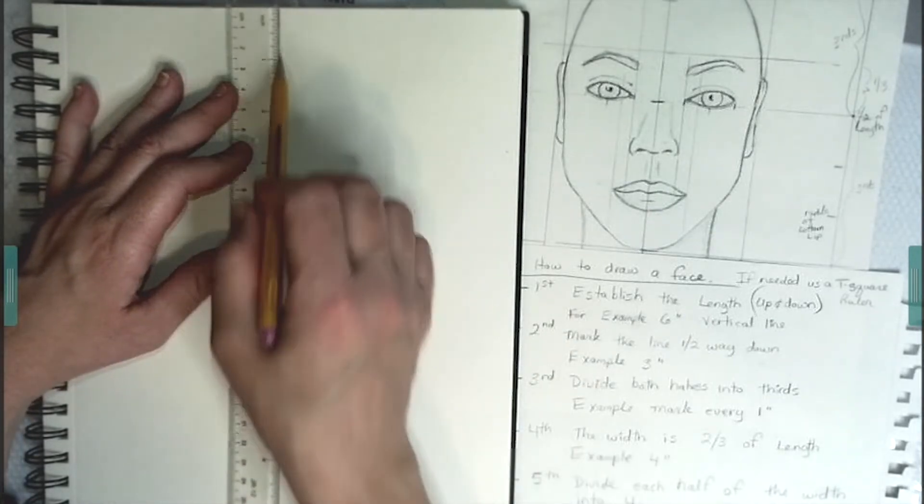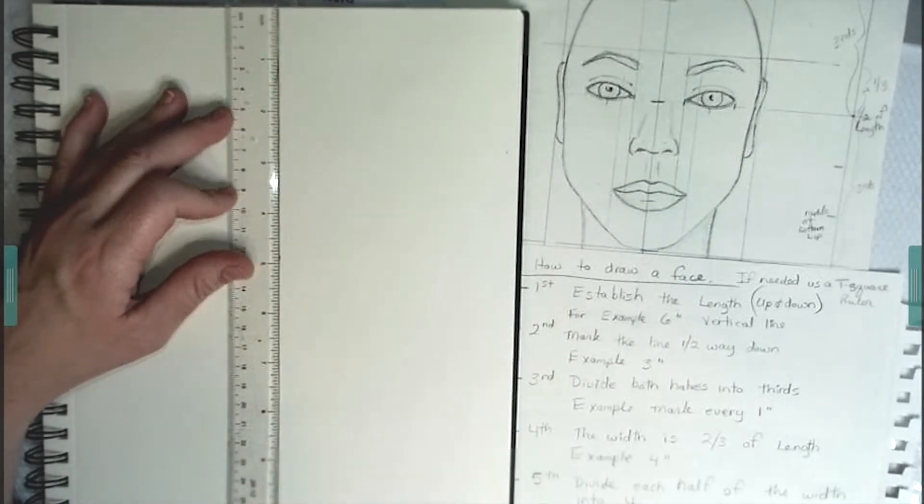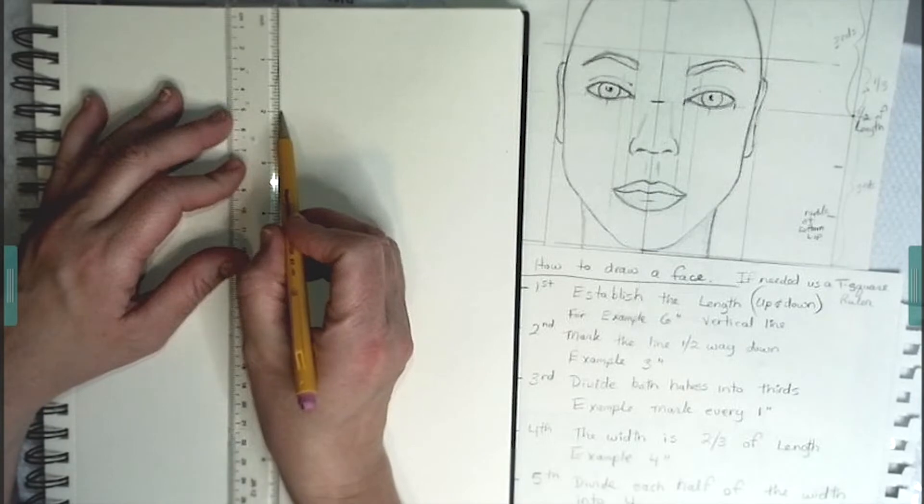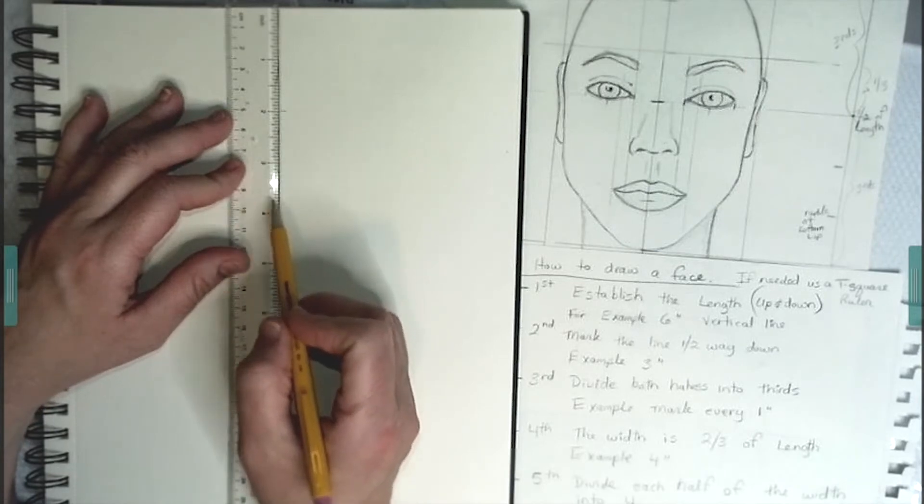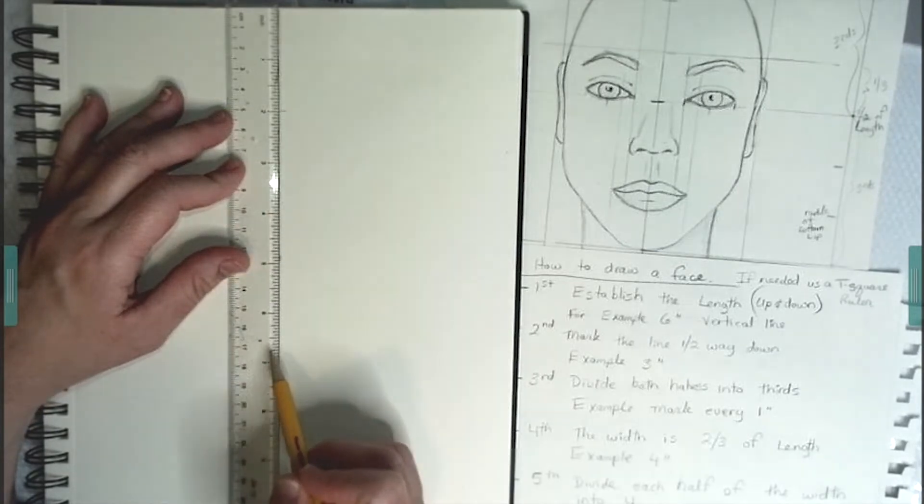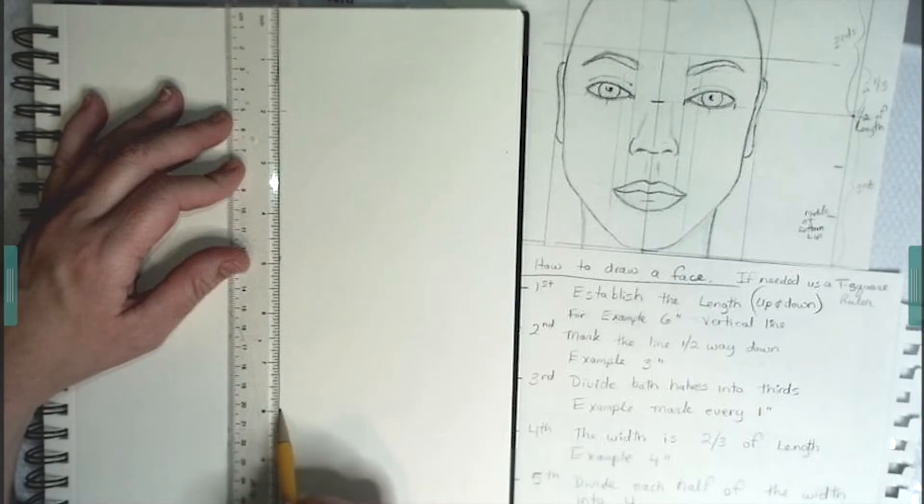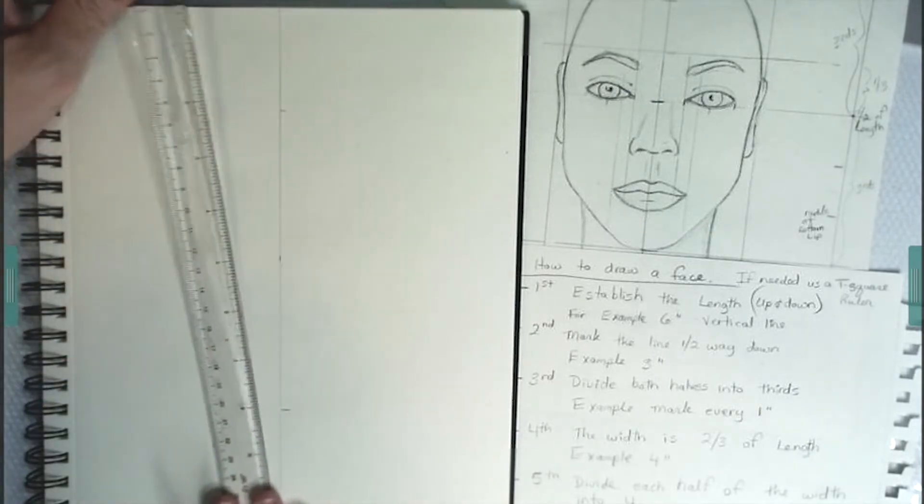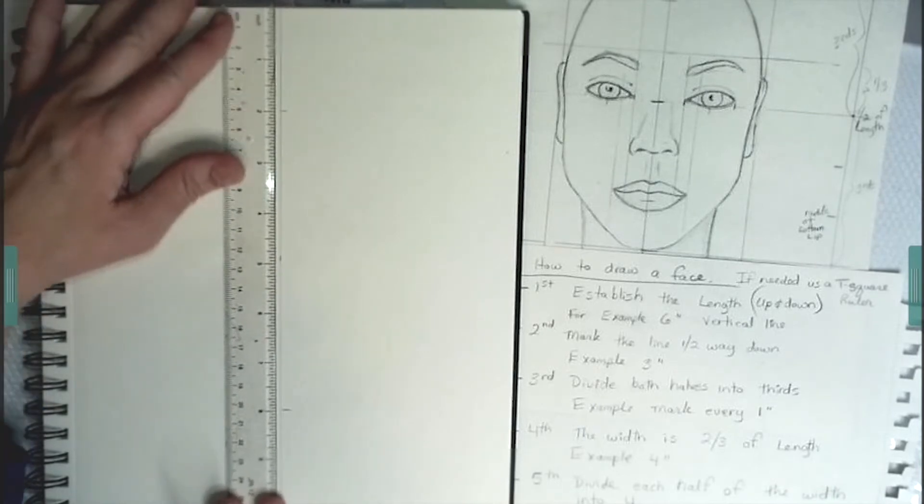When I begin to draw the face, I first start out by making a vertical line down the center of the page. For this example, our line is going to be the length of six inches. So mark off six inches somewhere in the center of the page.